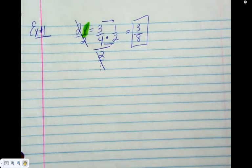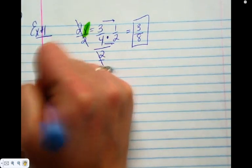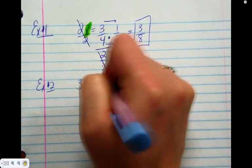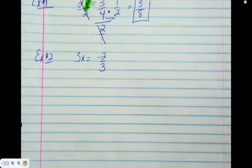So all we're doing is just combining what we did in unit 1, now applying it to equations. Number 2, 3x equals negative 2 thirds. What do you think step number 1 is going to be? So peek above, what was the first thing that we did? Divided by 2. This one we're going to divide by 3.